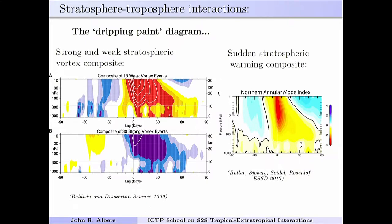Any heat anomaly or anything that alters PV — for example, an El Niño event driving an anomalously large stationary planetary wave into the stratosphere and weakening the polar vortex — creates a PV anomaly that will then imprint something non-locally.